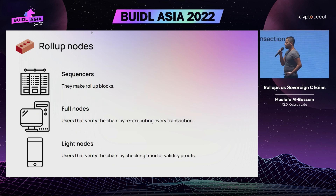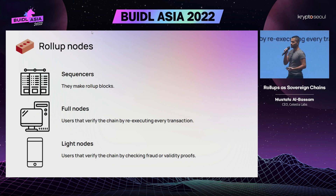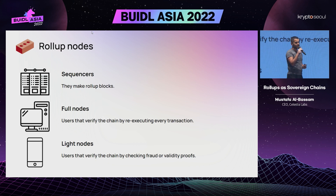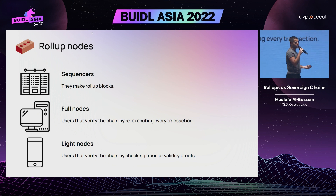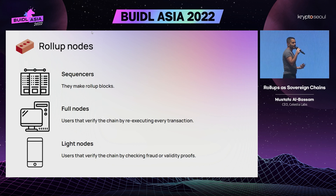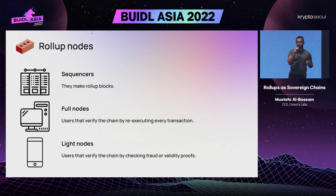There are three main parties in a rollup chain. You've got sequencers, which take transactions and actually make the blocks in that rollup and post it to the data layer. Then you've got full nodes, which are users that verify the entire chain by re-executing every transaction. They also might be producing fraud proofs or ZK proofs. And then you've got light nodes, which have lower resources, so they don't verify the chain by re-executing every transaction, but just rely on fraud proofs and ZK proofs generated by full nodes or sequencers.